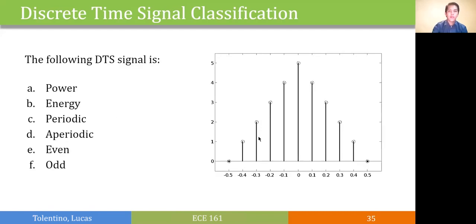Let's try to classify these signals. Here we are given an aperiodic signal with finite value. We can imagine that the sum of the squares of each sample will be finite, so it would be an energy signal, an aperiodic signal, and since this is symmetric with respect to the y axis, it is an even signal.